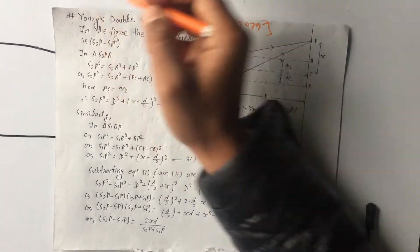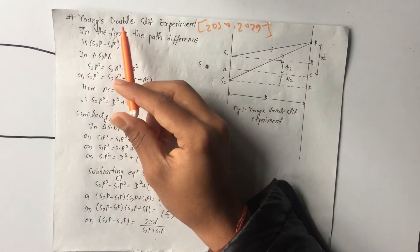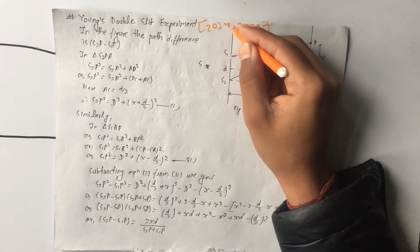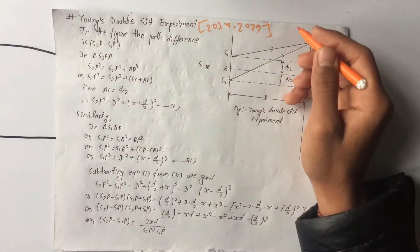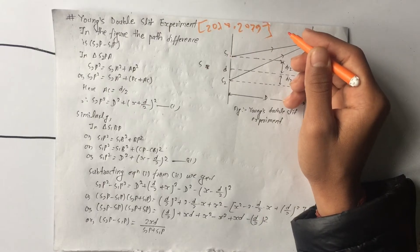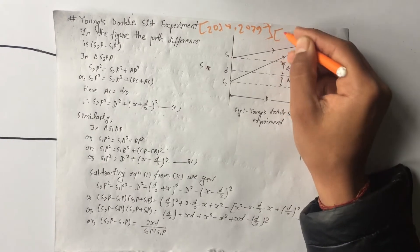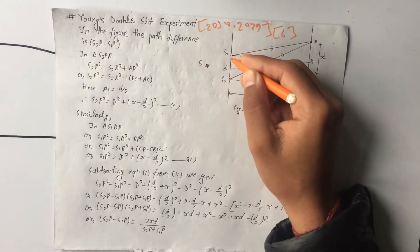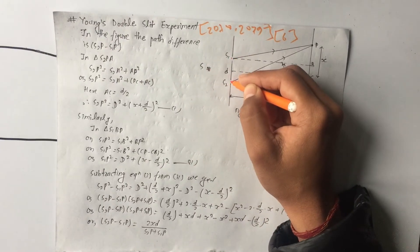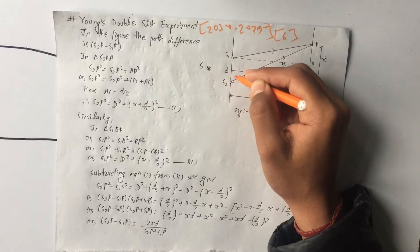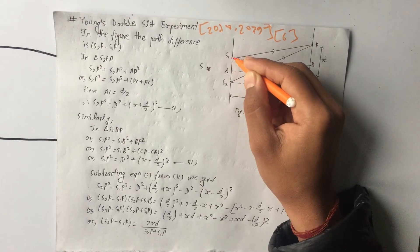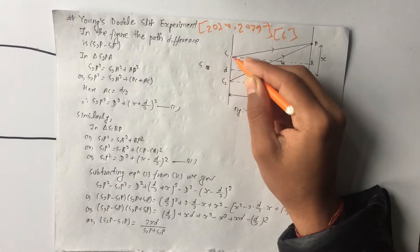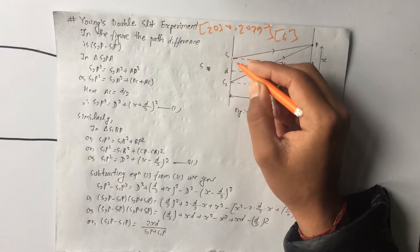Hello. Today I'm going to do a Young's Double Slit experiment. I'll be able to find this using monochromatic light. The current source acts as the source of wavelength and amplitude.